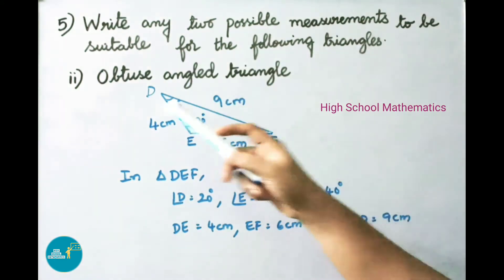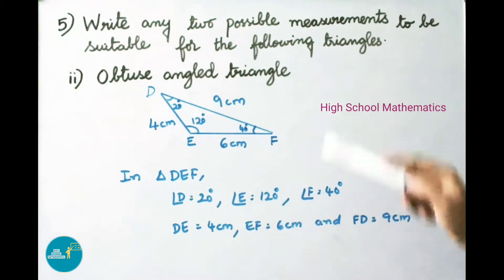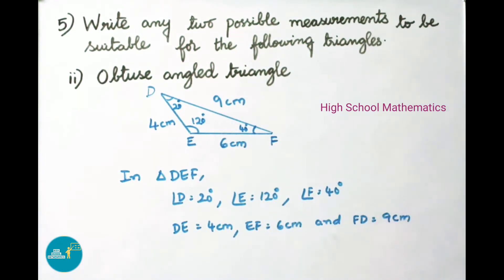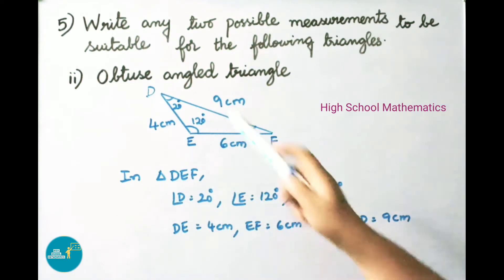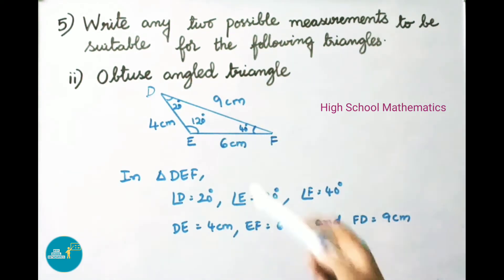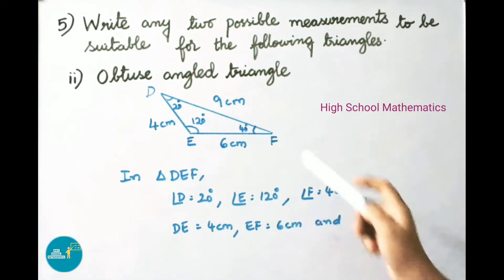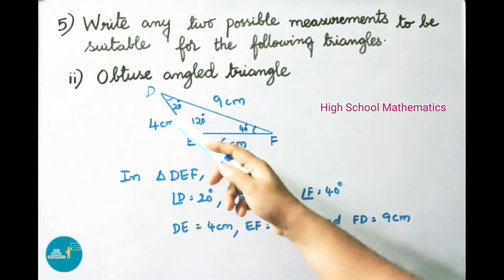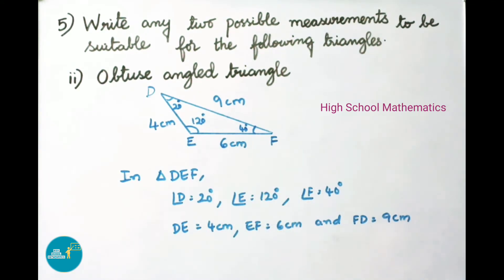Fifth question, second part: obtuse angle triangle. We have drawn triangle DEF. In triangle DEF, angle D equals 20 degrees, angle E equals 120 degrees, and angle F equals 40 degrees. Another set of measurements: side DE equals 4 cm, EF equals 6 cm, and FD equals 9 cm.